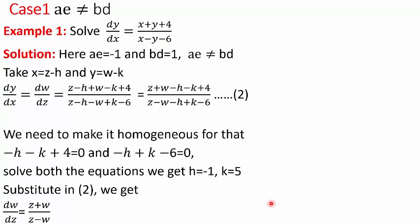For the first case where ae ≠ bd, Example 1: solve dy/dx = (x + y + 4)/(x − y − 6). The coefficients are a = 1, b = 1, c = 4, d = 1, e = −1, f = −6. So a·e = −1 and b·d = 1; they are not equal. We take x = z − h and y = w − k, substitute into the right-hand side, and replace dy/dx by dw/dz, giving dw/dz = (z − h + w − k + 4)/(z − h − w + k − 6).